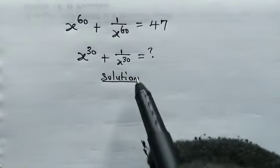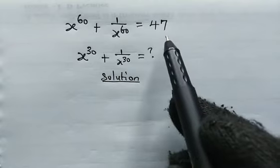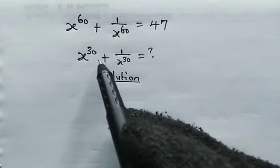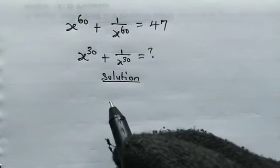We have x to the power of 60 plus 1 over x to the power of 60 equals 47. And right over here, we're going to evaluate x to the power of 30 plus 1 over x to the power of 30.